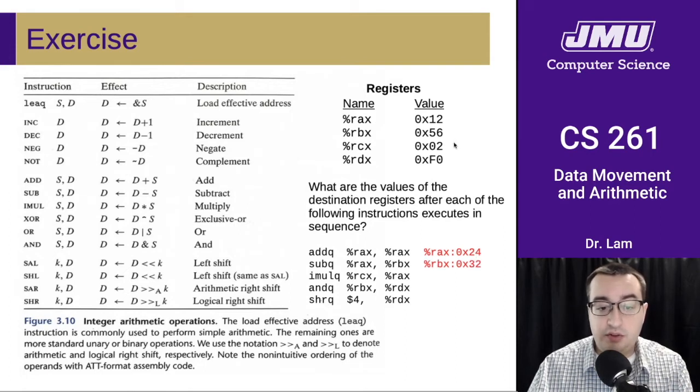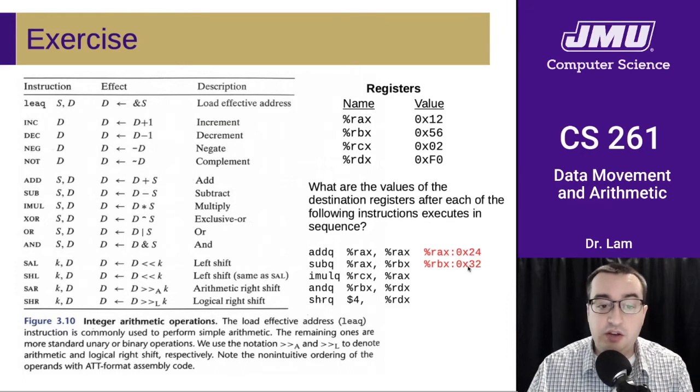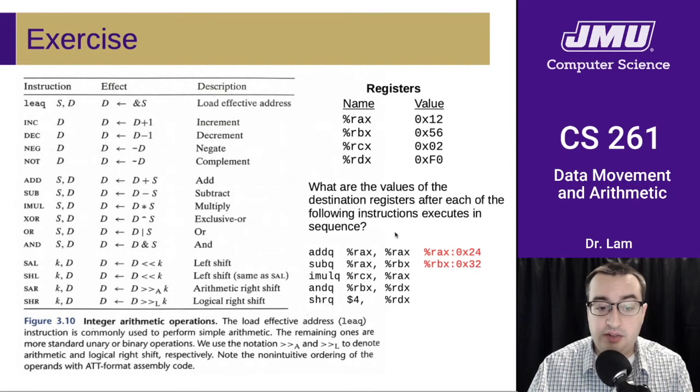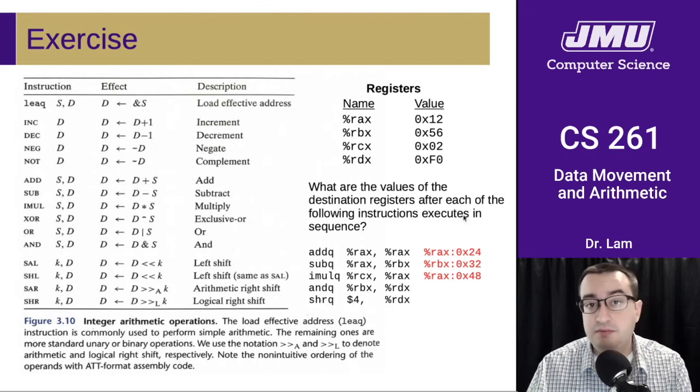IMUL rcx into rax. Again, this is going to modify rax. So we're going to multiply rax by 2, so that takes hex 24 to hex 48.